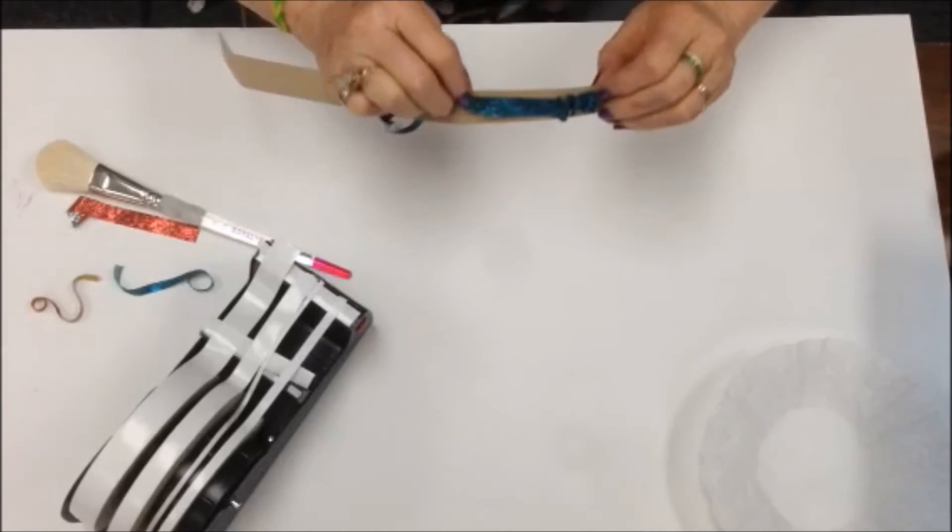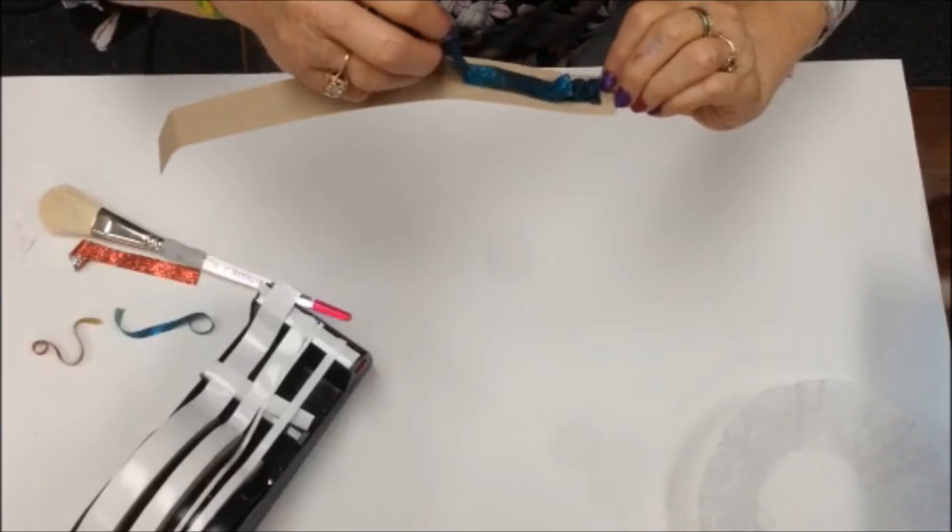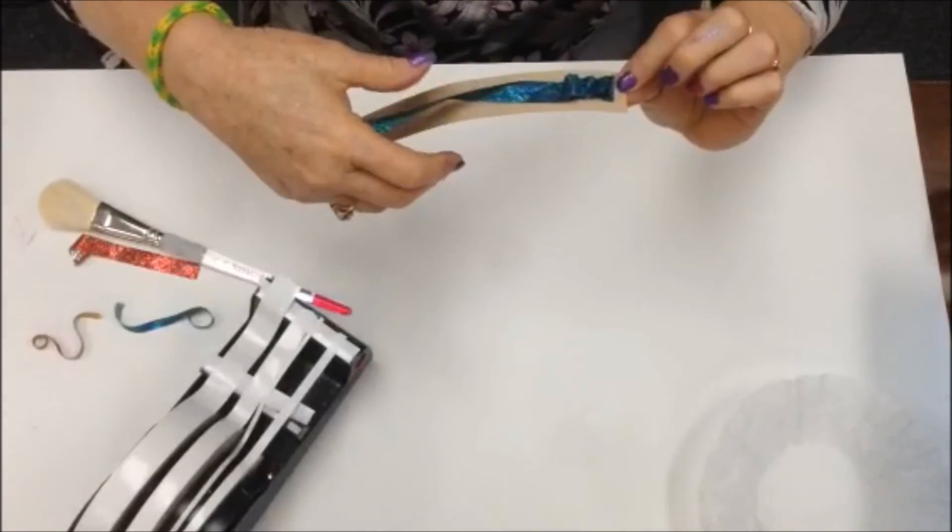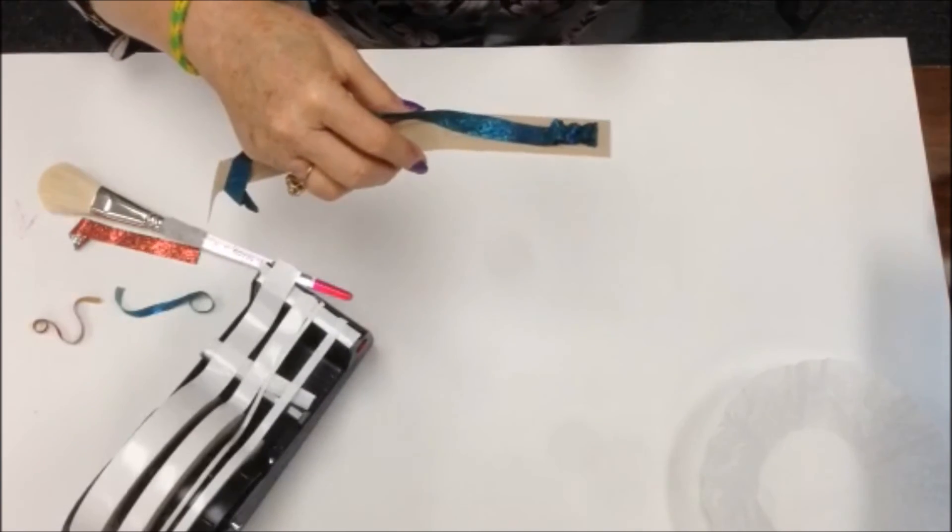I know it would be hard for you to see, but see, you can see how it's all ruffled and it just sticks there. So that makes a really nice embellishment for your card, and the glitter ribbon is going to match the color glitter you used.